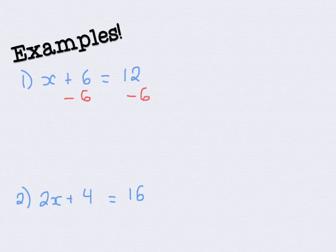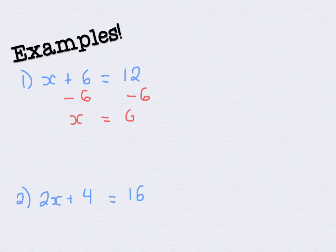Why do we do that? Well, what is 6 minus 6? 6 minus 6 is 0. We know that the 6's are basically gone, and so my x is officially alone on one side. And remembering that whatever I did to one side, I have to do to the other side — so I have to do 12 minus 6, and 12 minus 6 is just 6. So I have just solved that x is equal to 6.